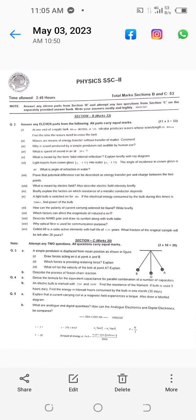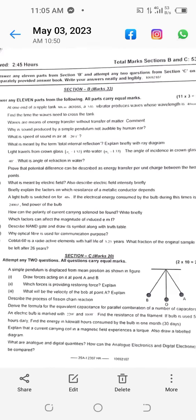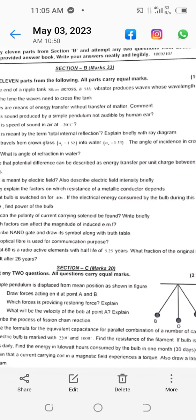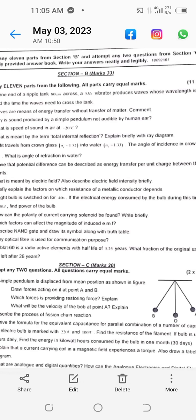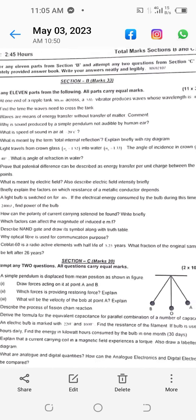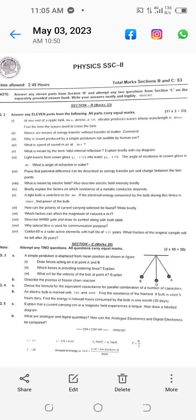Number six: Light travels from crown glass, refractive index 1.52, into water, refractive index 1.33. What is the angle of reflection in water?